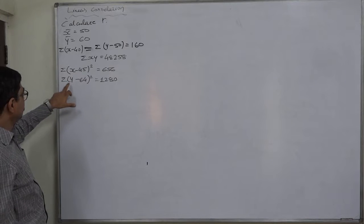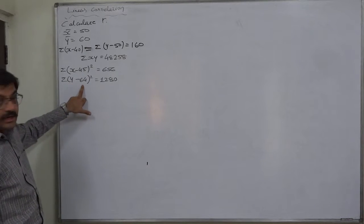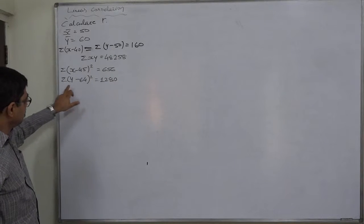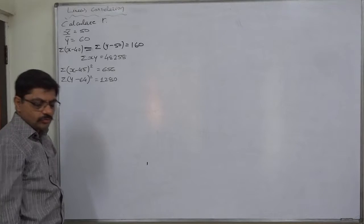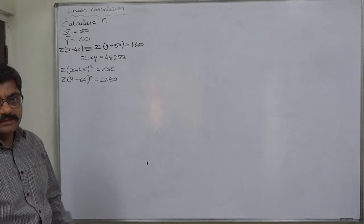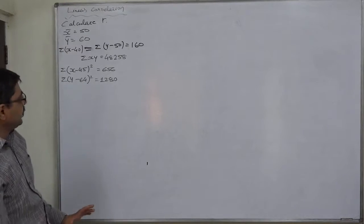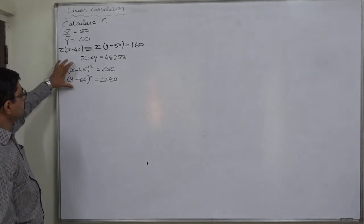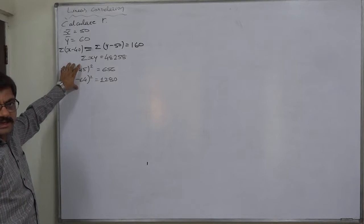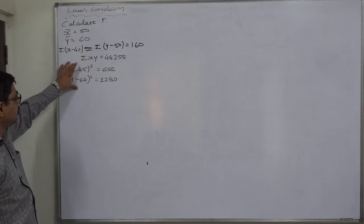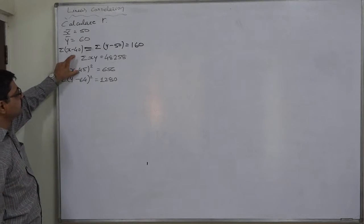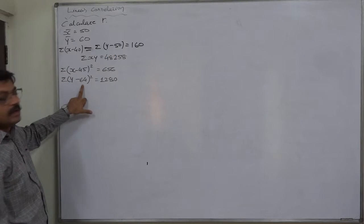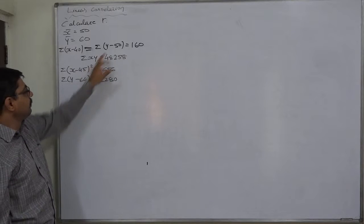Sigma(y minus 64) squared = 121,280. This is a hybrid kind of question. The matter of confusion for any student is: if we take sigma(x minus 40) as sigma u and sigma(y minus 50) as sigma v, these are not sigma u-squared and sigma v-squared, because in the case of sigma u and sigma u-squared, the assumed mean must be the same — but that is not the case here. Similarly for sigma v and sigma v-squared.